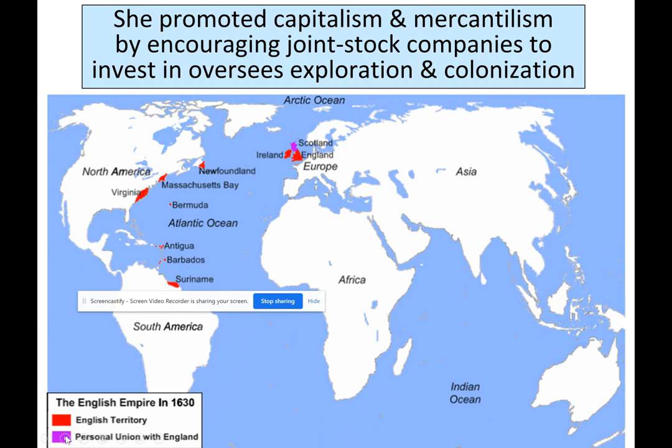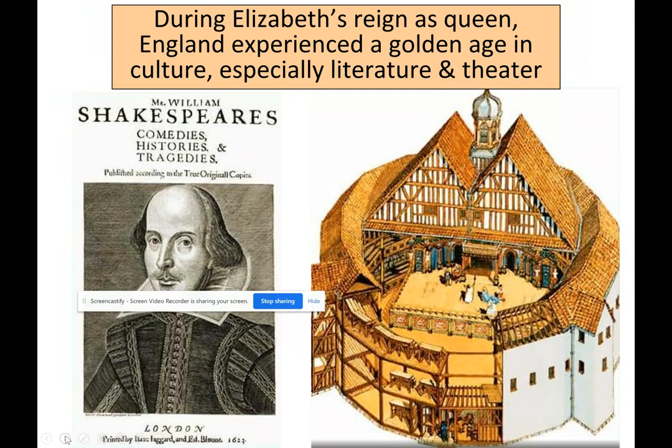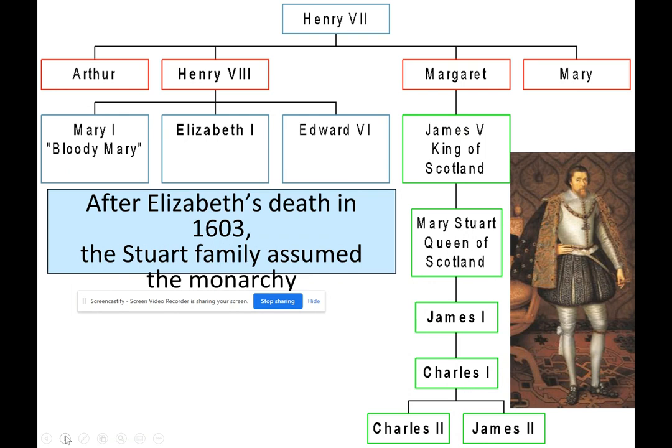Elizabeth promoted capitalism and mercantilism by encouraging joint-stock companies to invest in overseas exploration and colonization. During her reign, England experienced a golden age in culture, especially literature and theater — including Shakespeare.